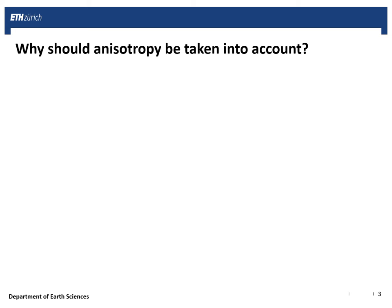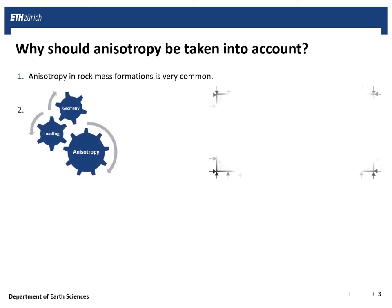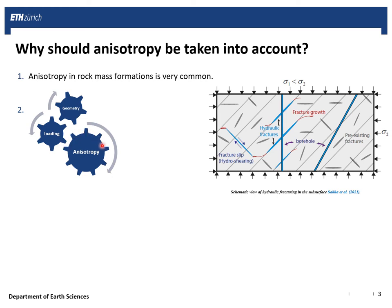The question is: why should we consider the effect of anisotropy? The answer is quite simple. First, anisotropy in rock mass formations is very common. Second, besides geometry and loading, anisotropy is another parameter that can affect the fracture path. Here we can see a schematic view of hydraulic fracturing in the subsurface. These parallel lines stand for the anisotropy, and as we can see, even in this borehole which aligns with one of the principal stresses, the hydraulic fractures near the borehole are affected by the presence of anisotropy.